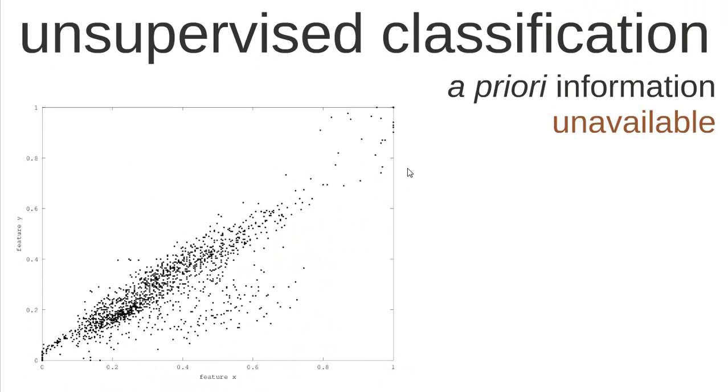Then we move to the second type of classification algorithms, which is the unsupervised classification algorithms. The main idea of these algorithms is that the a priori information is unavailable. So the user only knows the set of data and these features here that belong to the instances that we have.